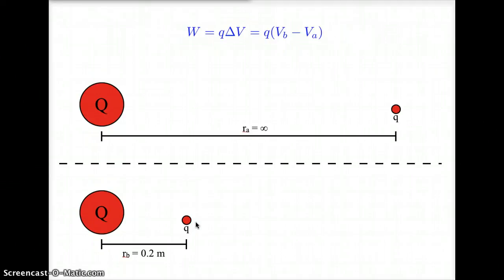We have an equation for calculating work if we know the electric potential at different values. The work required to move charge q some distance is going to be that amount of charge, q, times the change in electric potential. So all I need to figure out is the electric potential at the ending position, 0.2 meters away from the sphere, and the electric potential at the starting position, infinitely far away from the charged sphere.